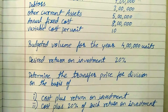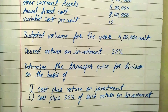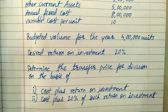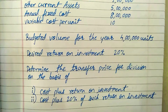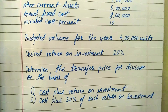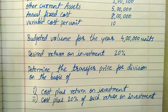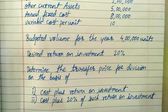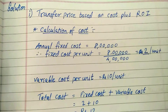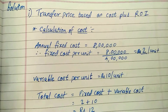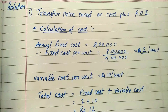What they have asked us is to determine the transfer price for the division on the basis of the two criteria: first one is cost plus return on investment, and second is cost plus 20 percent of such transfer price. Let's see how to do it one by one. The transfer price is based on cost plus ROI, so first we need to calculate the cost per unit.